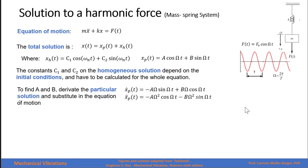Let's start by finding a and b from the particular solution. The derivative of the particular solution will be: a times the derivative of cosine, which is negative sine, times the internal derivative omega, plus b times the derivative of sine, which is cosine, times the internal derivative. Deriving again, we get negative a times the internal derivative squared times cosine, and negative b times the internal derivative squared times sine.